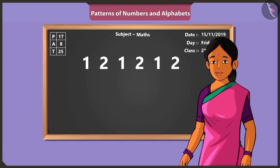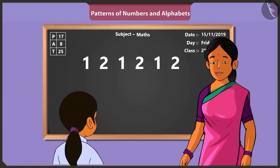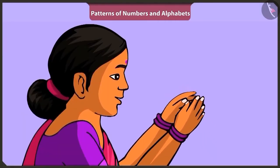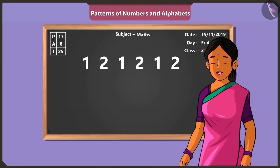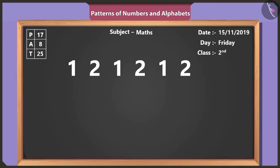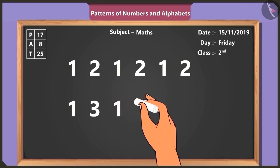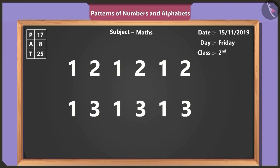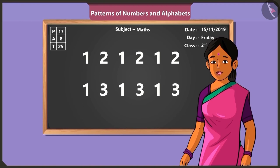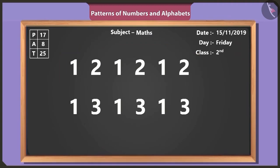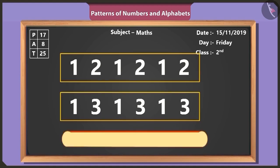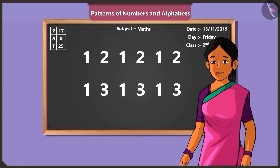Well done. Binny, now you come forward and count my claps. Okay, ma'am. How many times did I clap? At first you clapped once, then three, then you continued one, three, one, three. Well done, Binny. Now can you tell me, what is special about these numbers? Here, the first line has number one and number two repeated again and again. And in the second line, number one and number three are repeated. Oh yes, this has become a pattern of numbers. Rightly said, Binny.